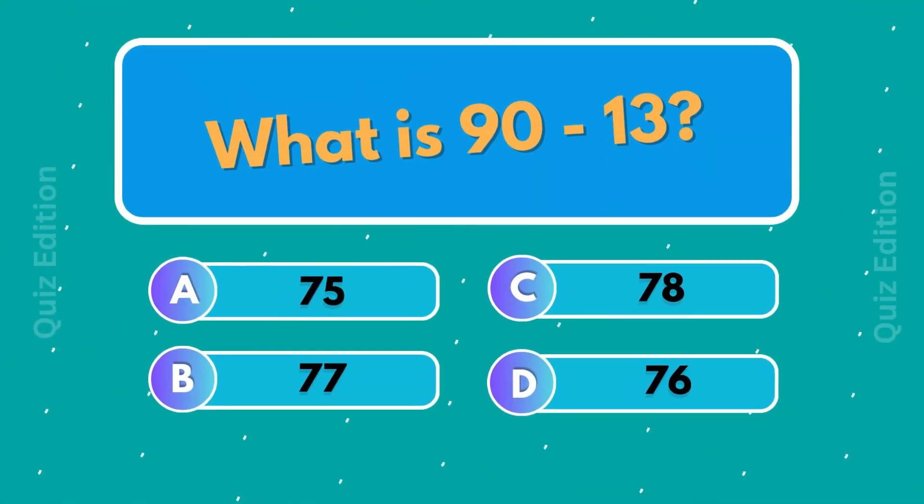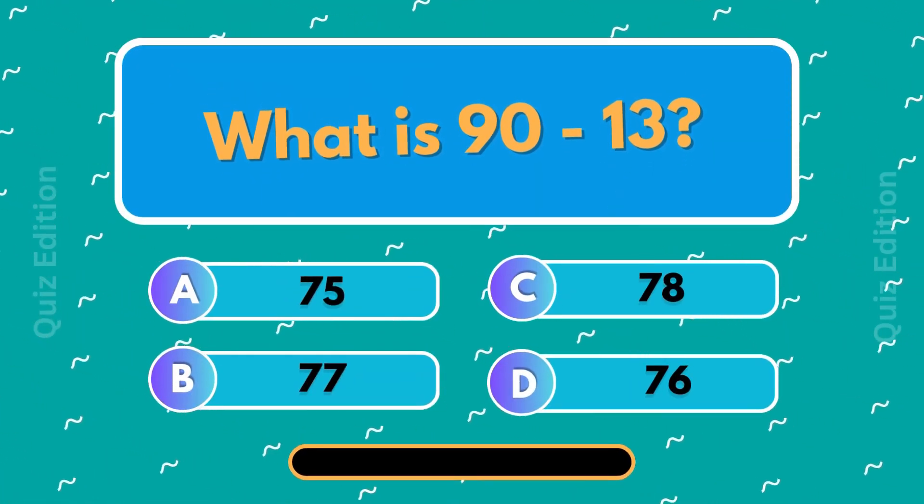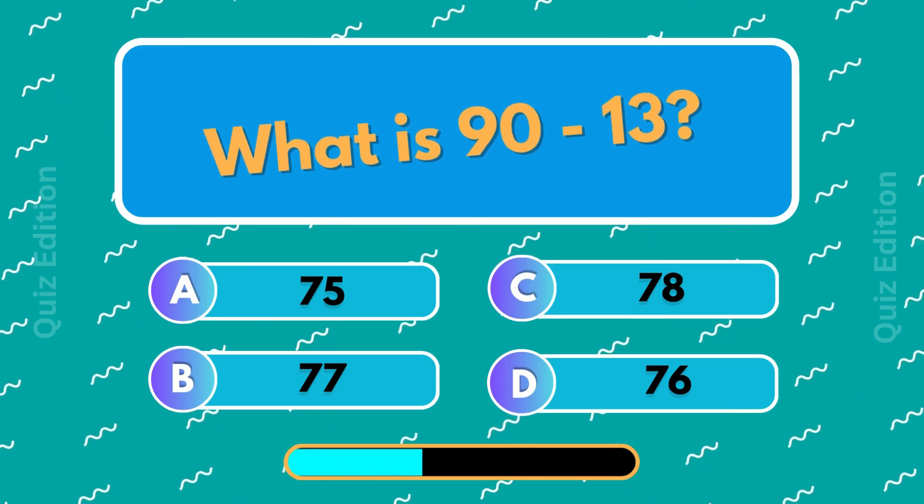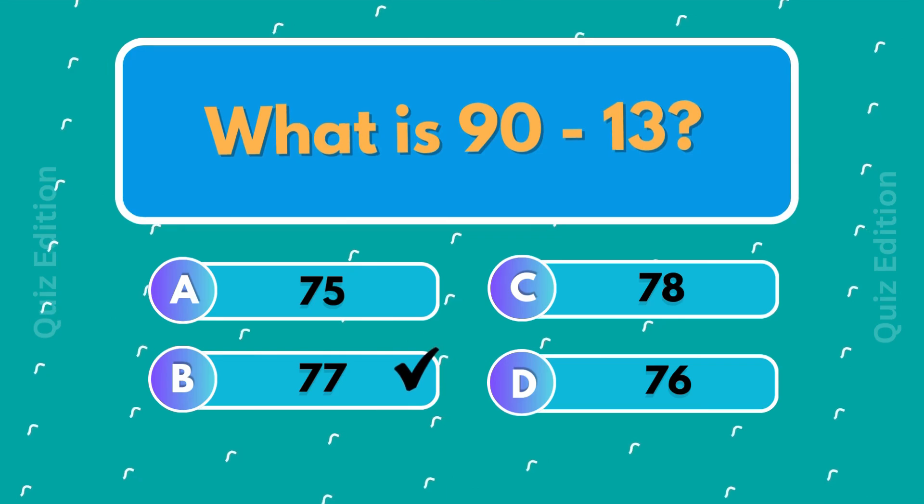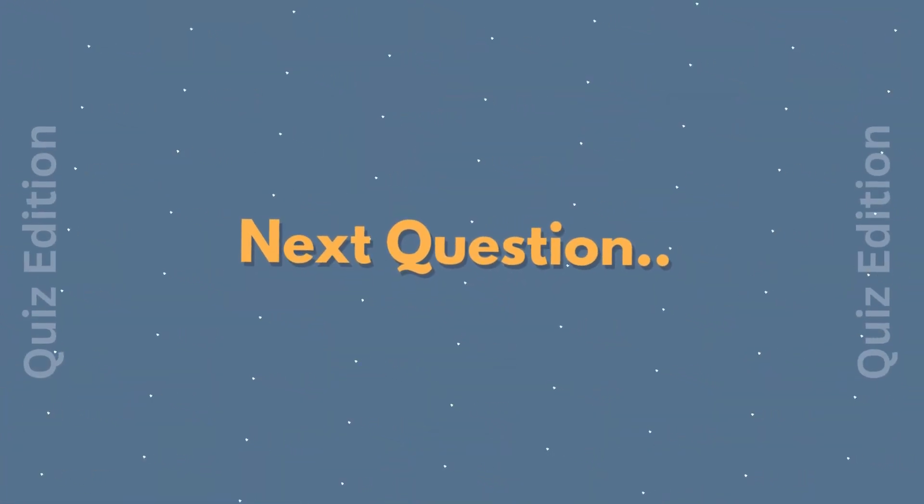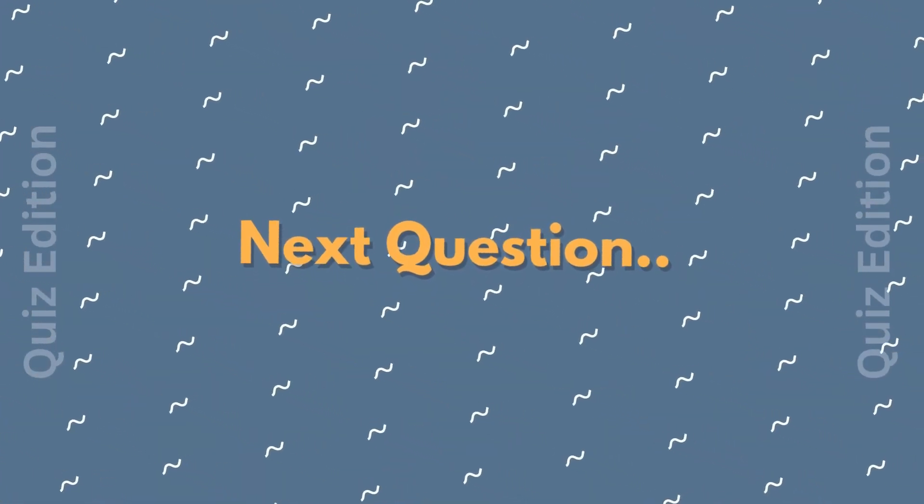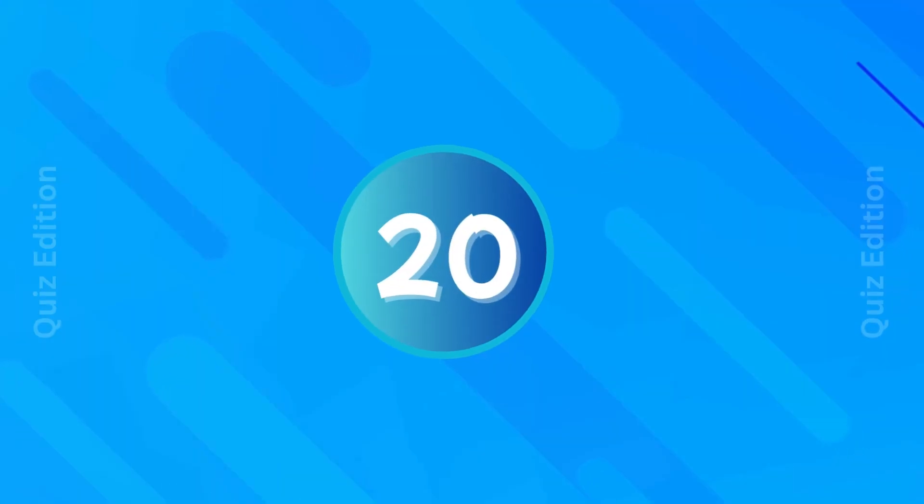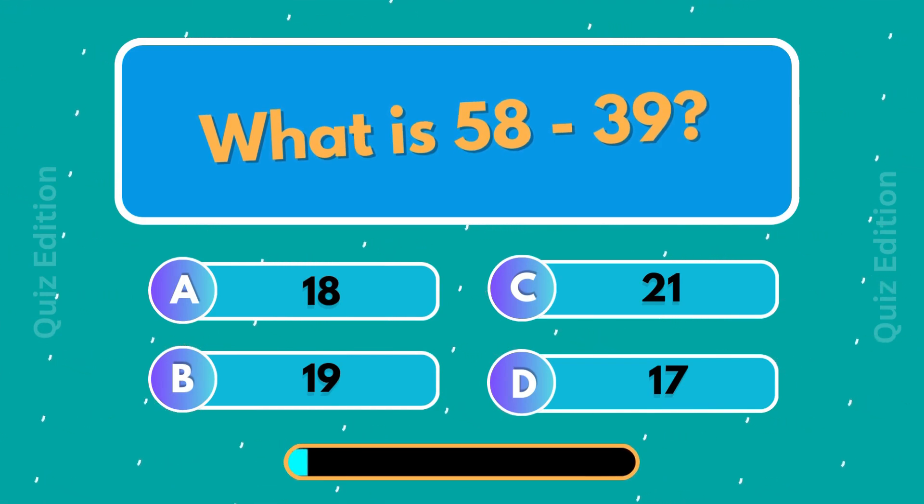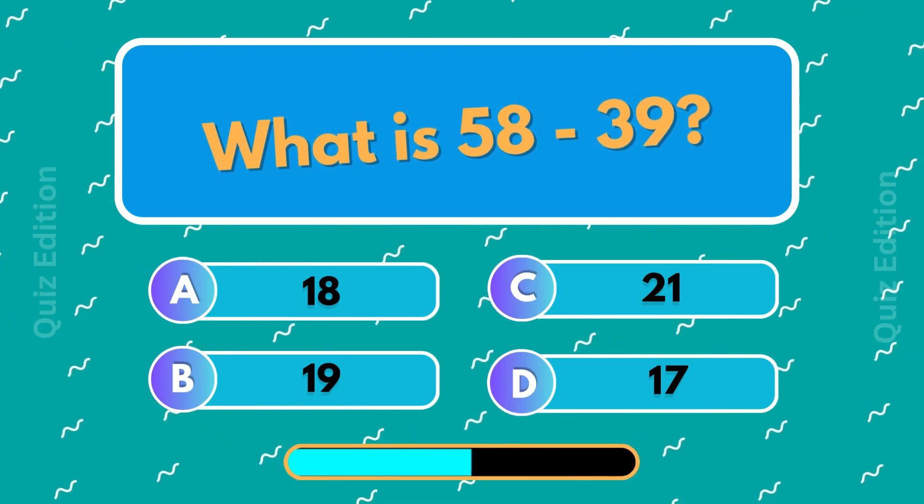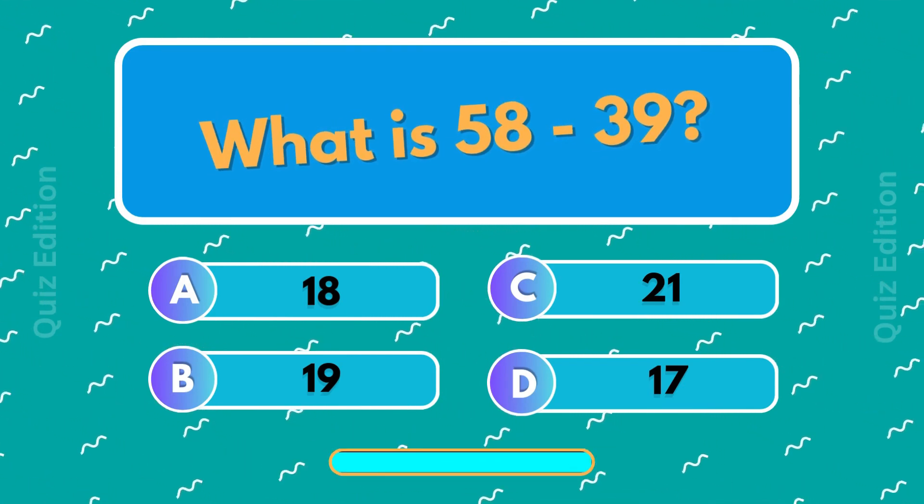What is 90 minus 13? 77. What is 58 minus 39? 19.